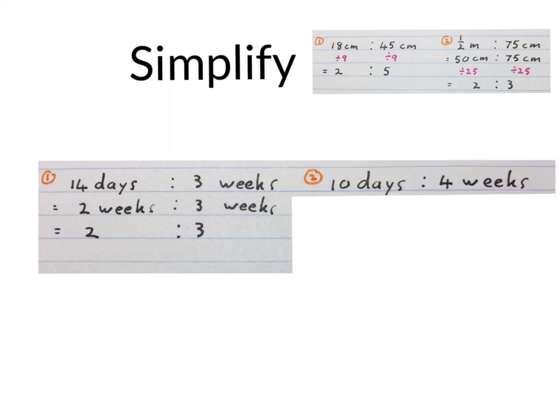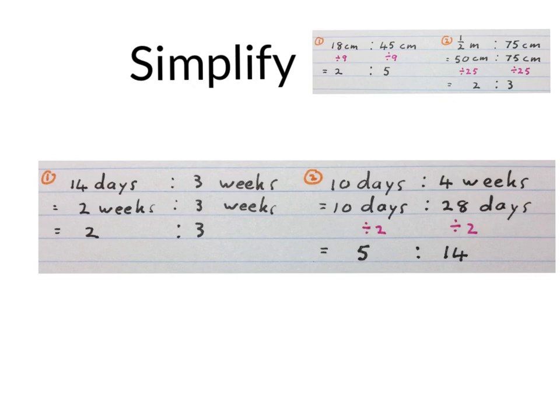Let's use a different method on the next ratio. We have 10 days to 4 weeks. You may convert both of them to days. So we have 10 days to 28 days. 4 weeks is 4 times 7 which is 28 days. The highest common factor of these two numbers is 2. So you divide 2 into 10, you get 5, and 2 into 28 gives you 14. So 10 days to 4 weeks simplifies to 5 to 14.